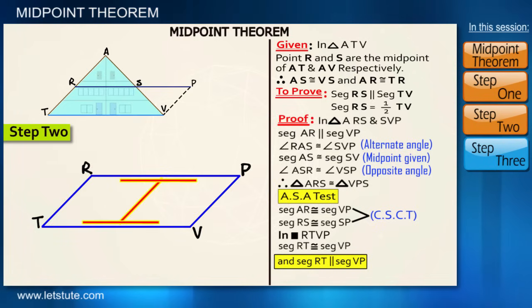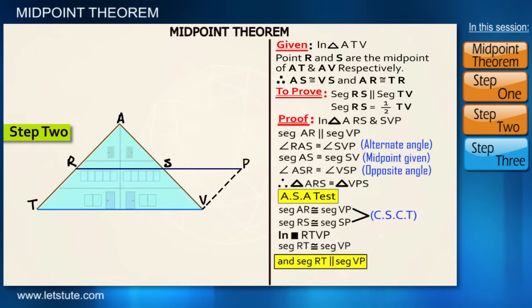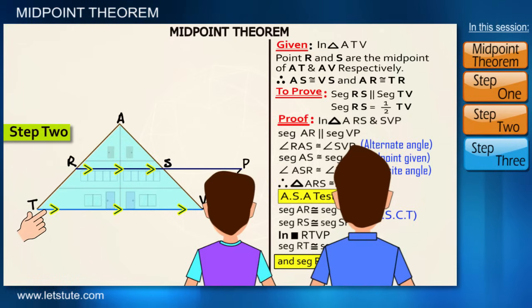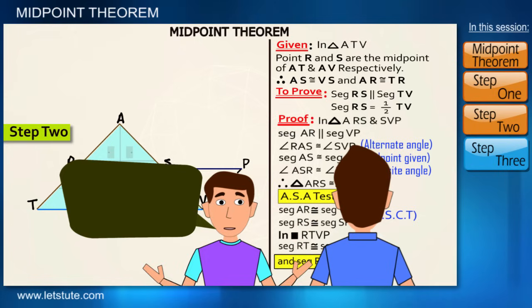And friends, RP is parallel to TV because they are opposite sides of a parallelogram, right? Therefore, being part of segment RP, RS is also parallel to TV. So the first part is proved. Are you getting it? Great! John, hats off to geometry.